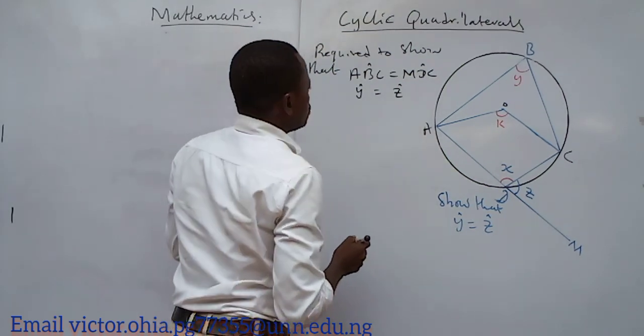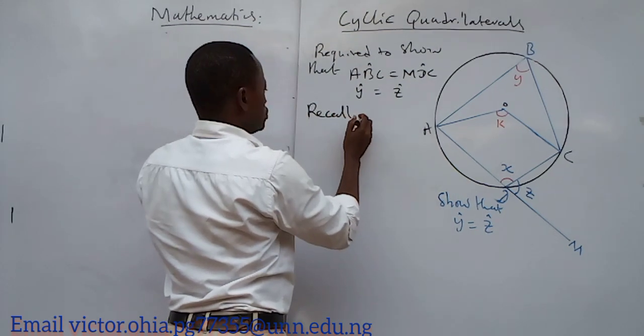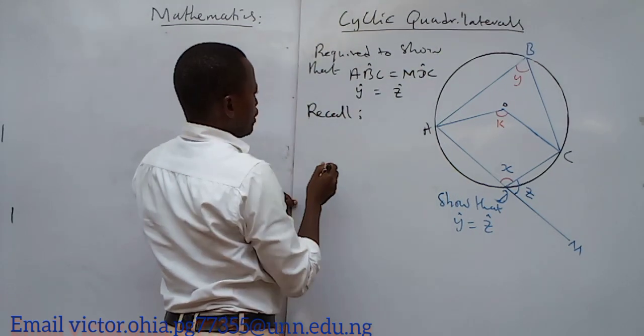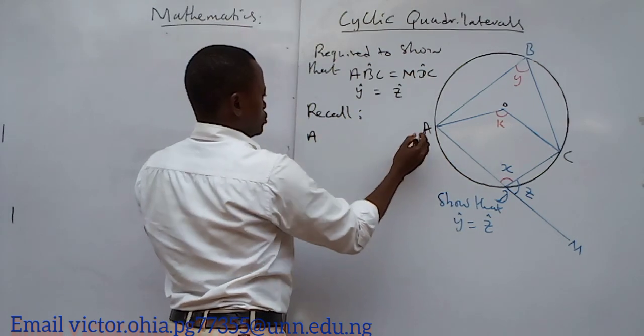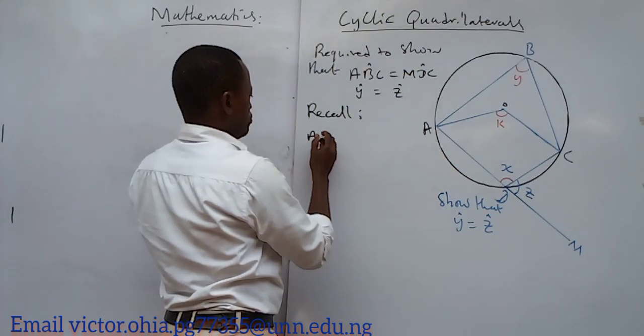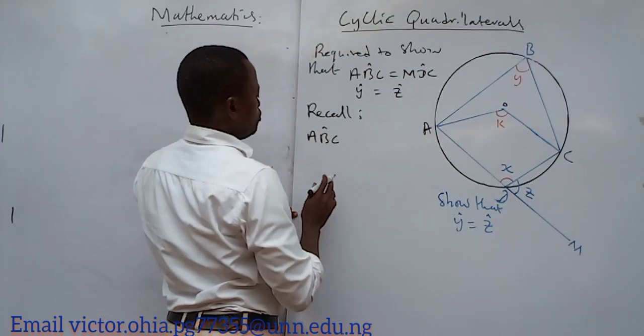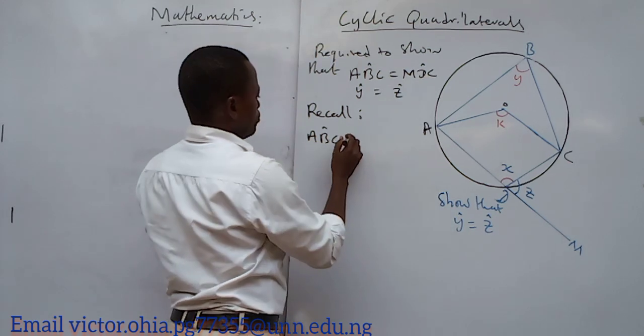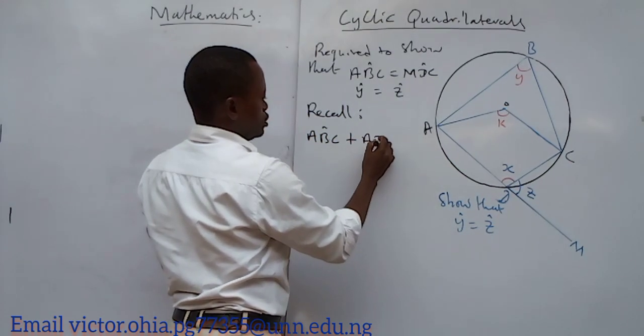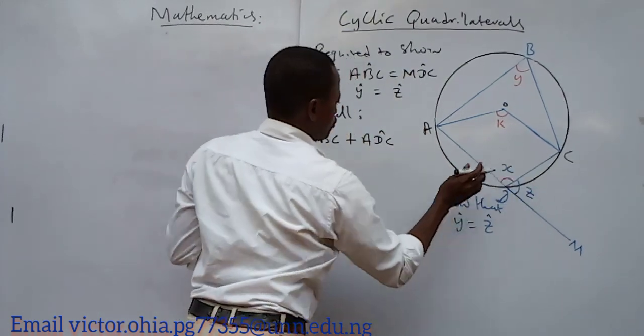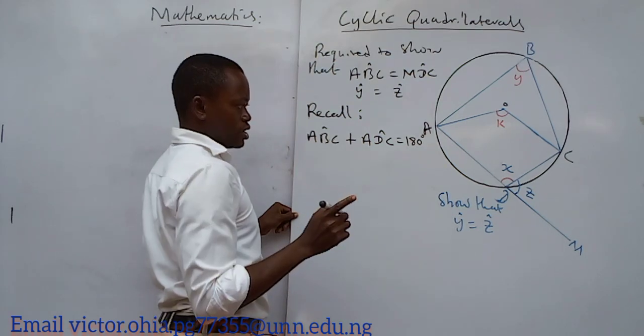Okay, we say now recall. I don't want to take time doing that recall. Recall that angle ABC plus angle ADC is equal to 180 degrees. You record that.